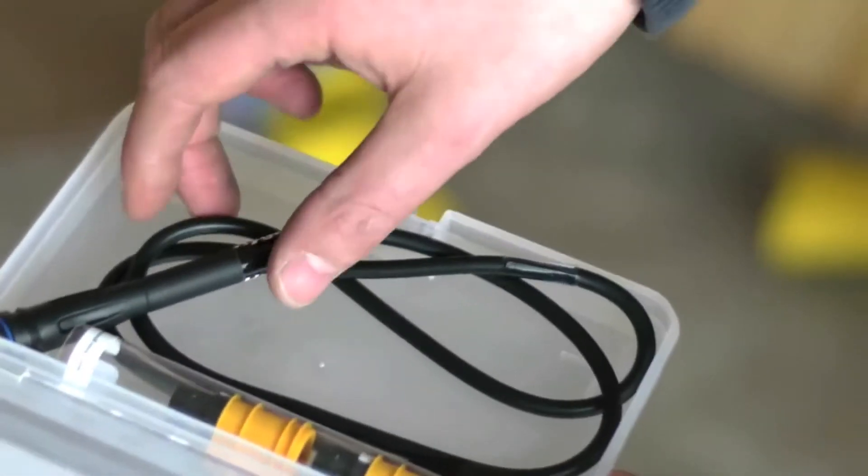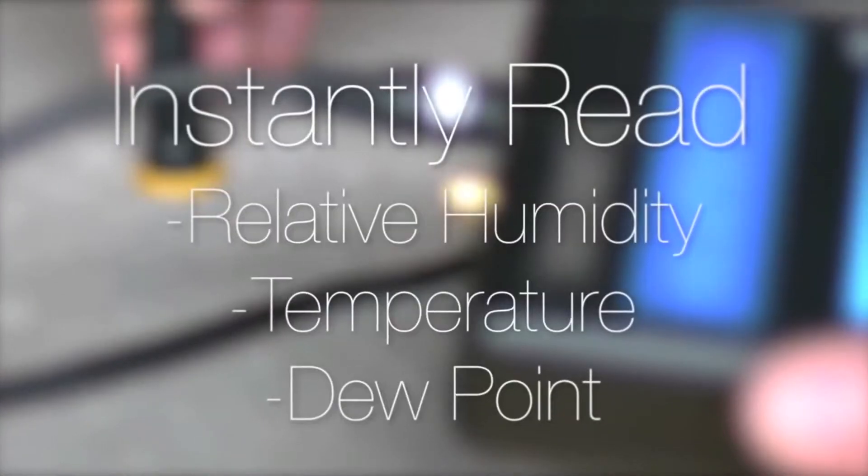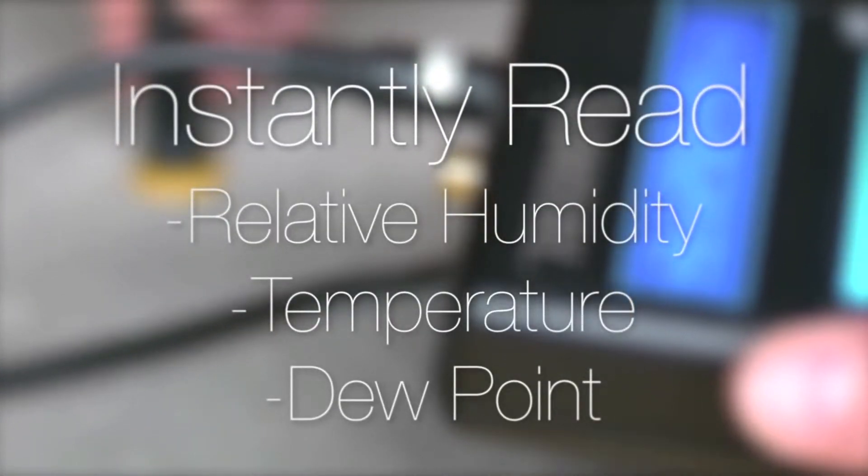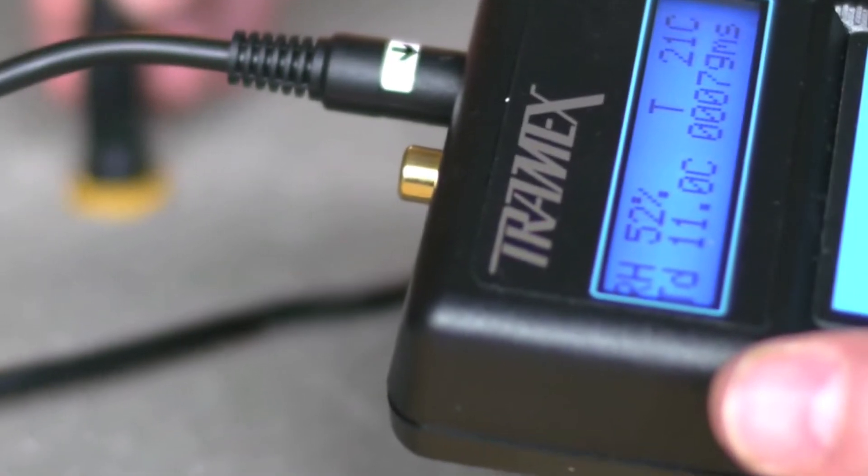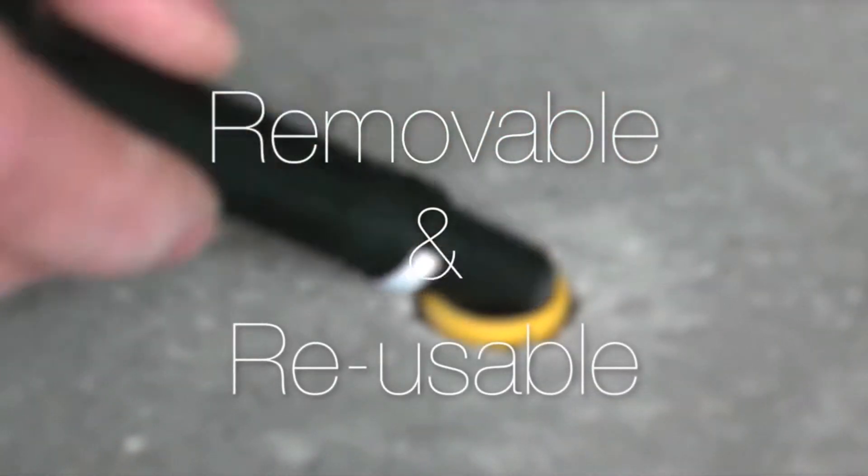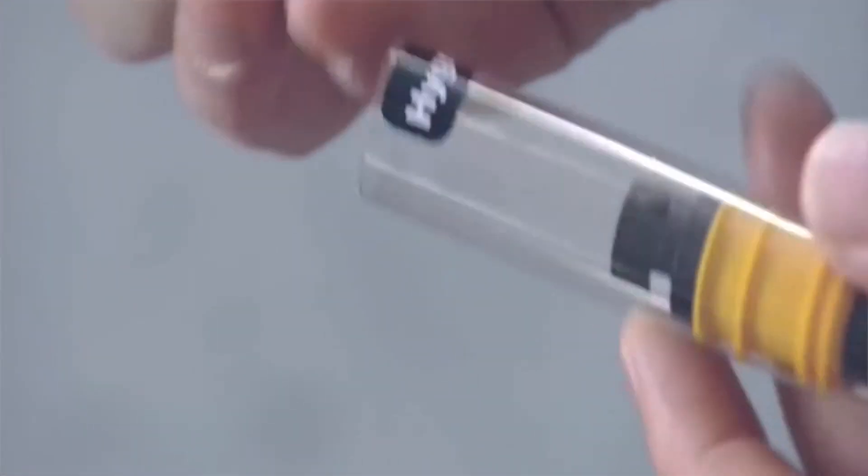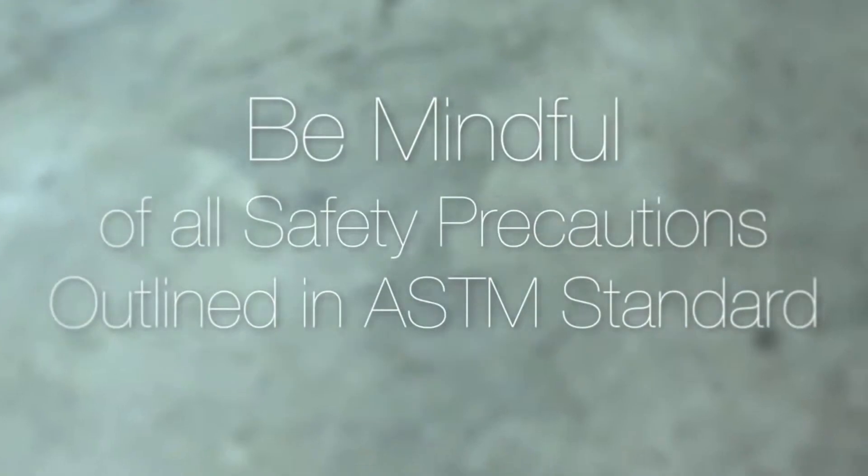When taking readings, plug the interface into the Hygroi probe and instantly read the relative humidity, temperature and dew point simultaneously on the clear display. When testing is complete, the Hygroi probes can be removed with the extraction tool and used repeatedly. The user must be mindful of all the proper safety precautions as mentioned in the ASTM standard.